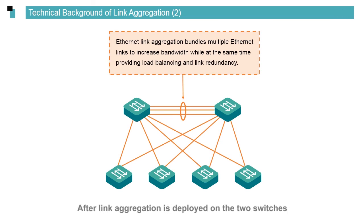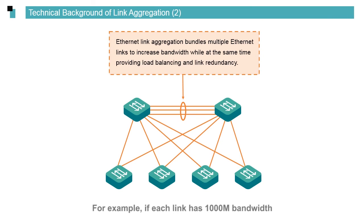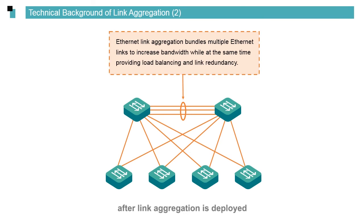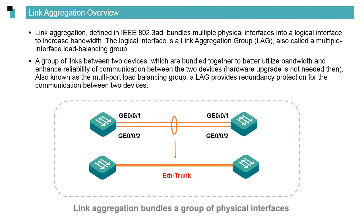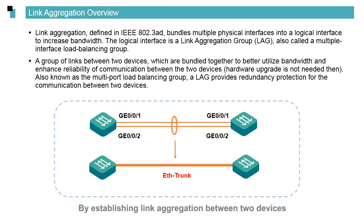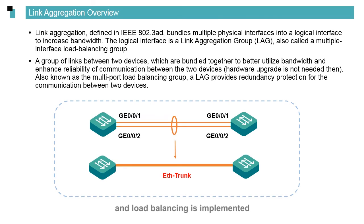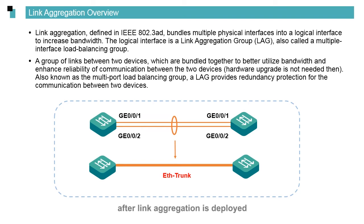Link aggregation bundles links. After link aggregation is deployed on two switches, the three links are bundled as a logical link. For example, if each link has 1000 Mbps bandwidth, the total available bandwidth is 3000 Mbps after link aggregation is deployed. Logically, there is only one link and therefore loops do not exist. Link aggregation bundles a group of physical interfaces as one logical interface to increase bandwidth and improve redundancy, implementing load balancing and improving link usage. The original interface is replaced by the ETH trunk logical interface.